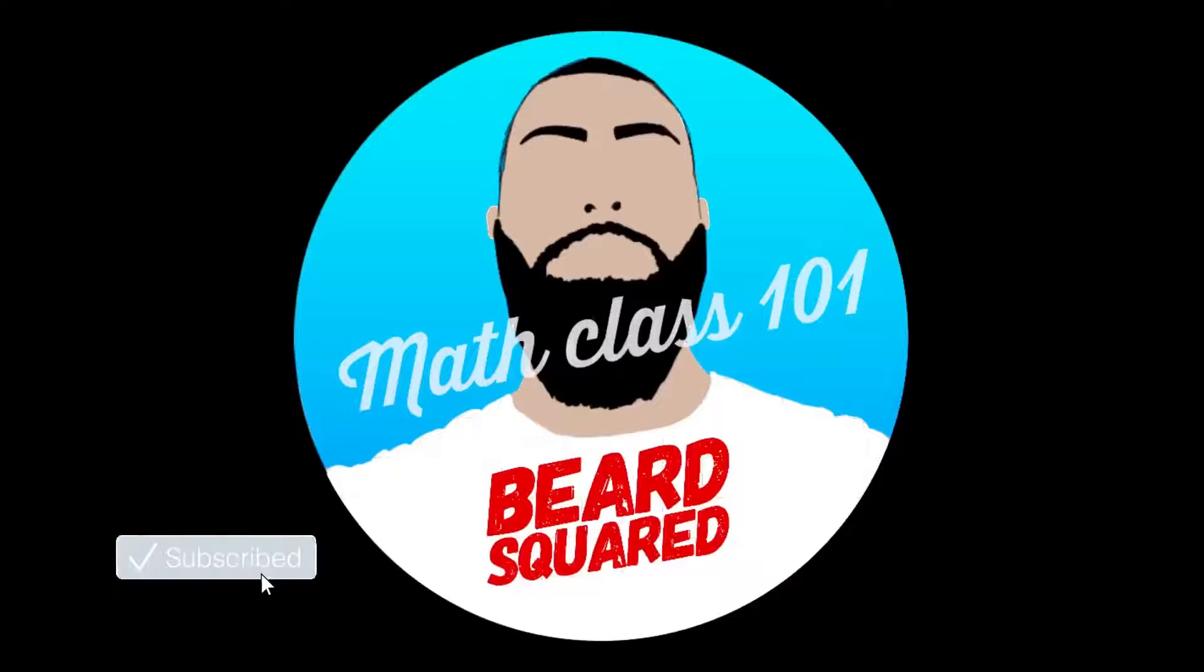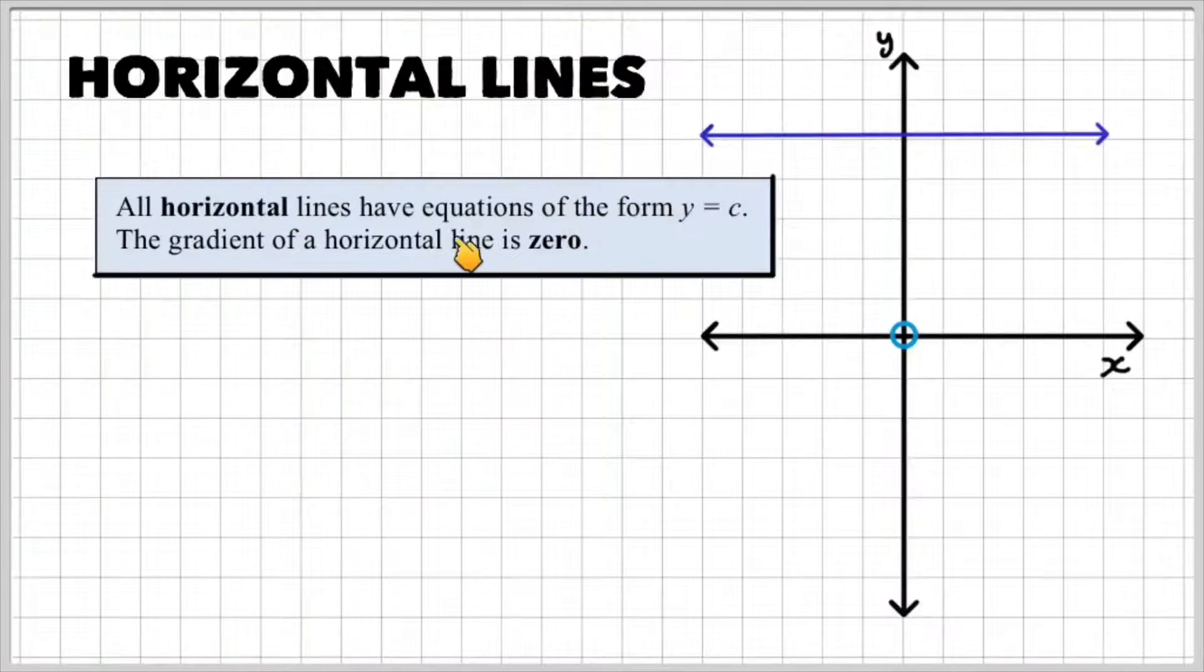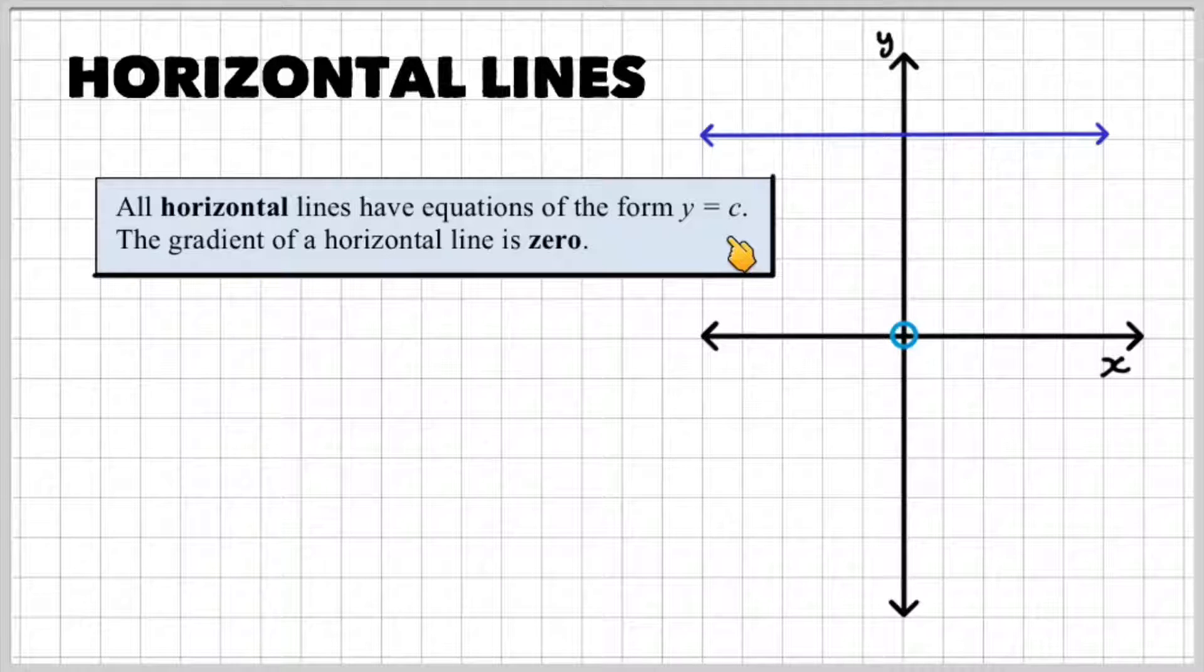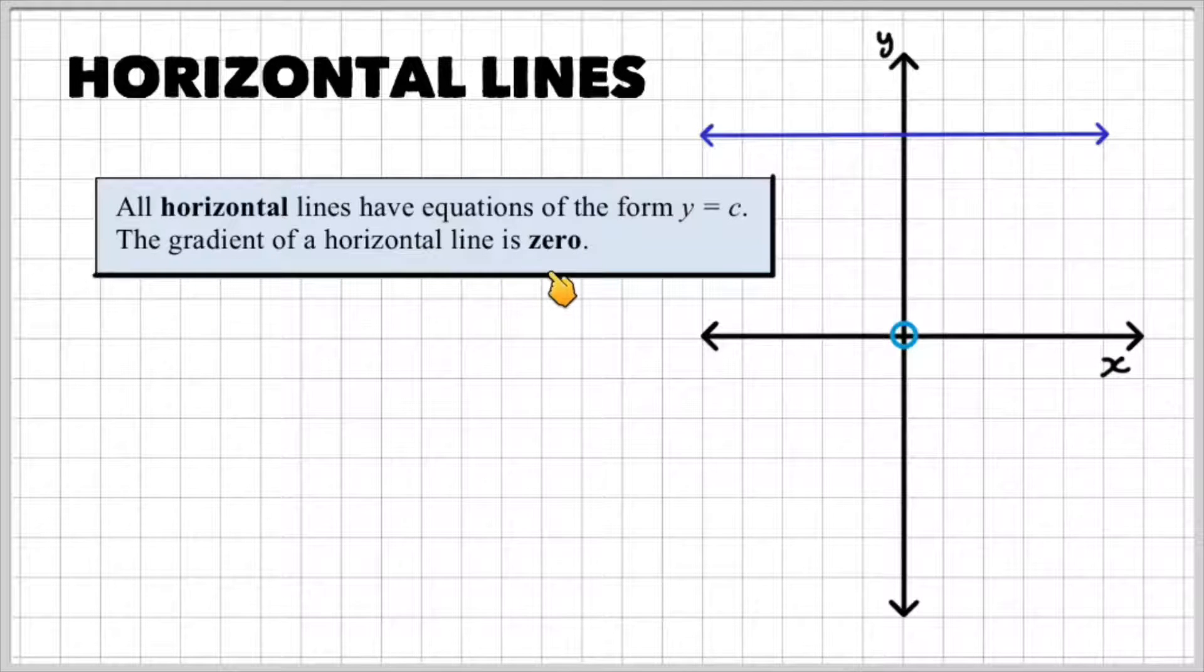So let's move on to horizontal lines. We can see that all horizontal lines have the equation of the form y equals c. c could represent any constant, any value, as long as the horizontal line has the equation y equals something. The gradient of the horizontal line is 0.